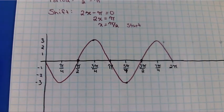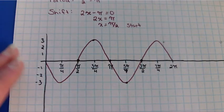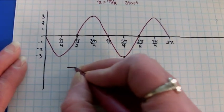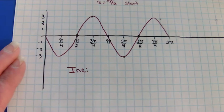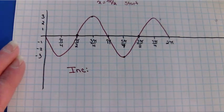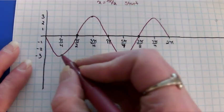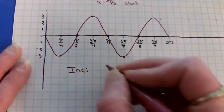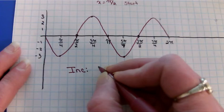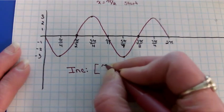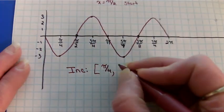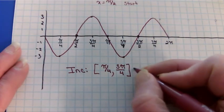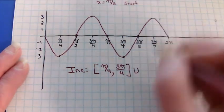All right. So when am I increasing? So these are the questions I think most people were having problems with. Increasing means the graph is going uphill. So it starts going uphill here to there. So that's from π/4 to 3π/4. Does it do it again? Yep. From 5π/4 to 7π/4.